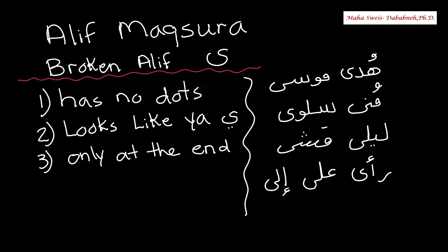Let's talk about Aleph Maqsura. Sometimes they call it Aleph Maqsura, sometimes they call it Broken Aleph. It looks like Ya, but without dots. And it's always at the end of the word. You can see some female names with a broken Aleph, some male names. Sometimes you can see verbs, sometimes prepositions.